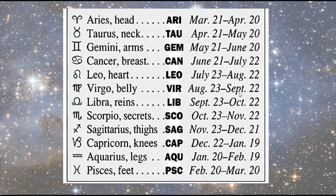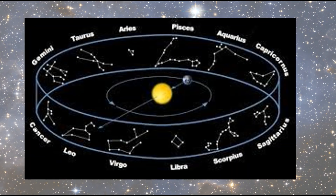Here are the zodiac signs: Aries, Taurus, Gemini, Cancer, Leo, Virgo, Libra, Scorpio, Sagittarius, Capricorn, Aquarius, and Pisces. You can look at your birthday to find your zodiac sign. For example, my birthday is August 14, so August 14 is Leo — Leo is my zodiac sign. Here are the stars or constellations that you can see for each sign.